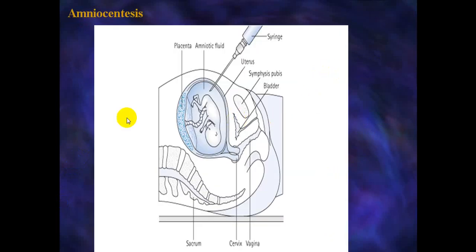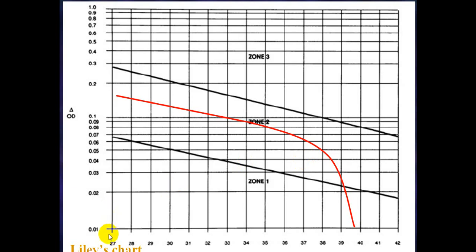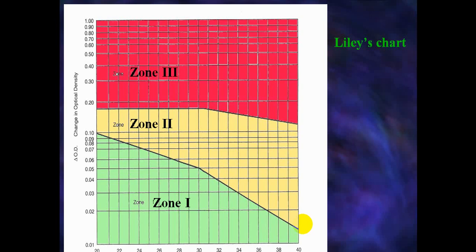This shows the maneuver of amniocentesis to obtain amniotic fluid from the amniotic sac using a needle or tube. The Liley chart has Zone 1 from 0.1 to 0.07, Zone 2 from 0.07 to 0.09, and Zone 3 above that. These three zones determine the severity of the affected fetus. If the fetus crosses from Zone 1 into Zone 2 or Zone 3, the complication becomes more severe and hemolysis more advanced.